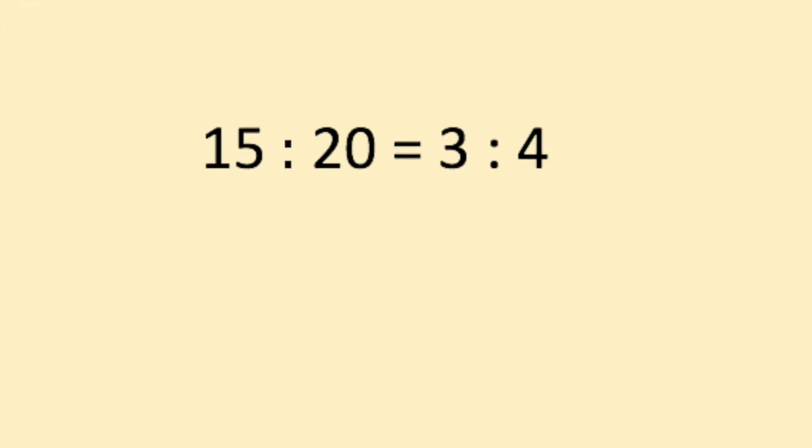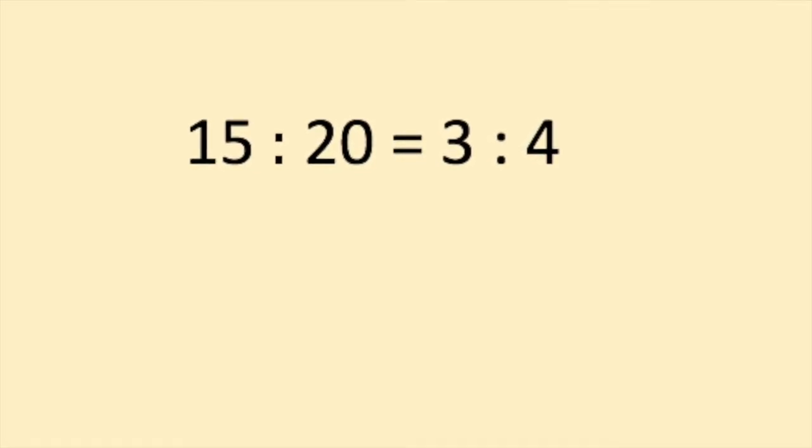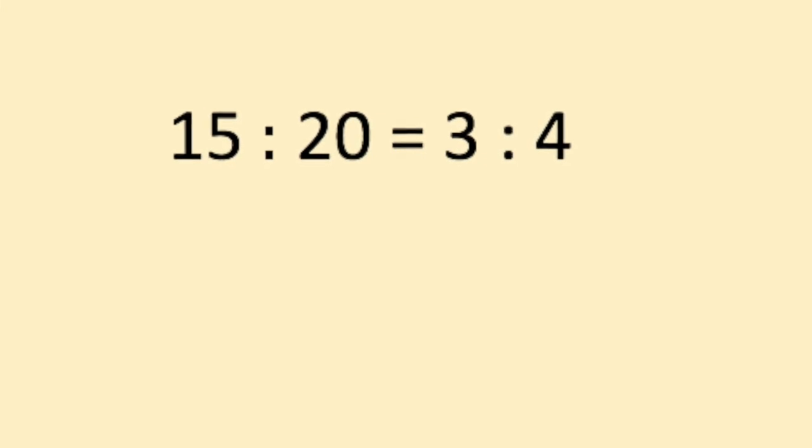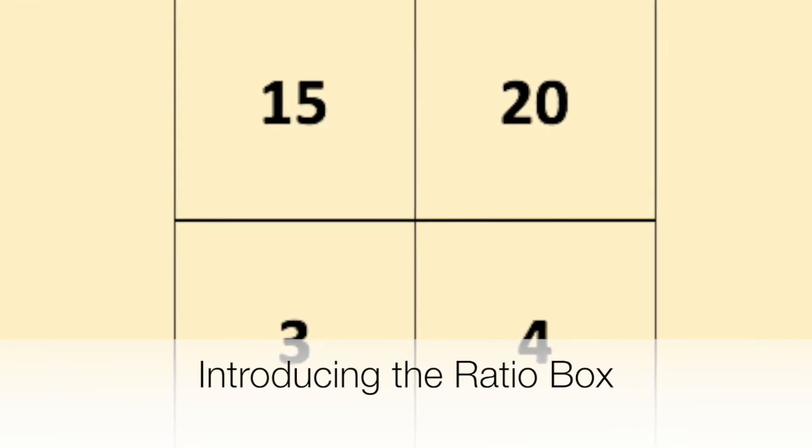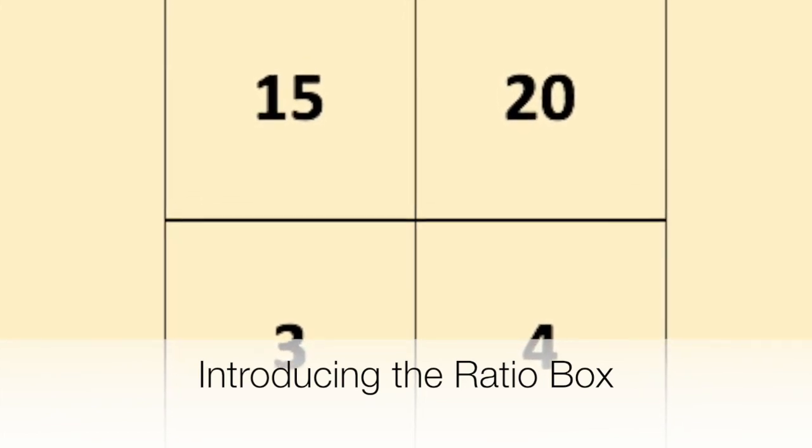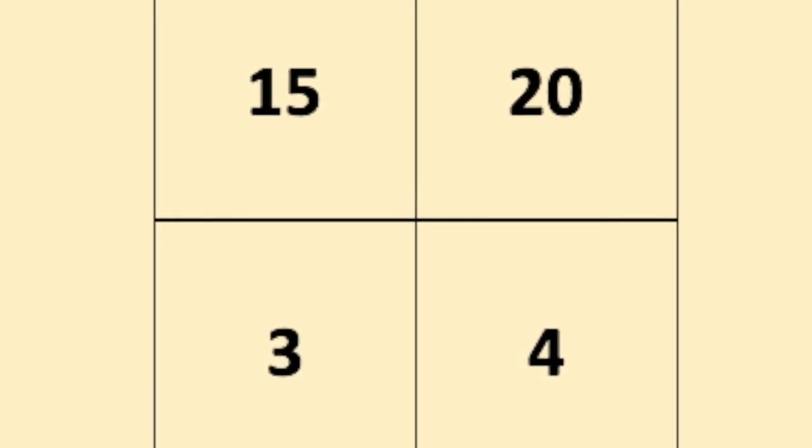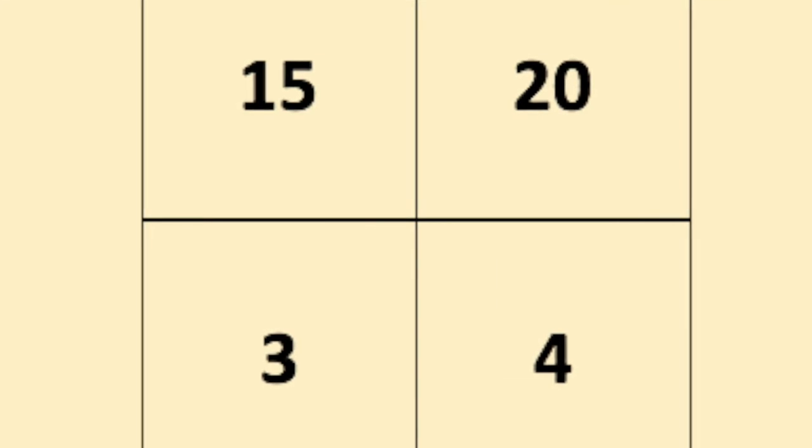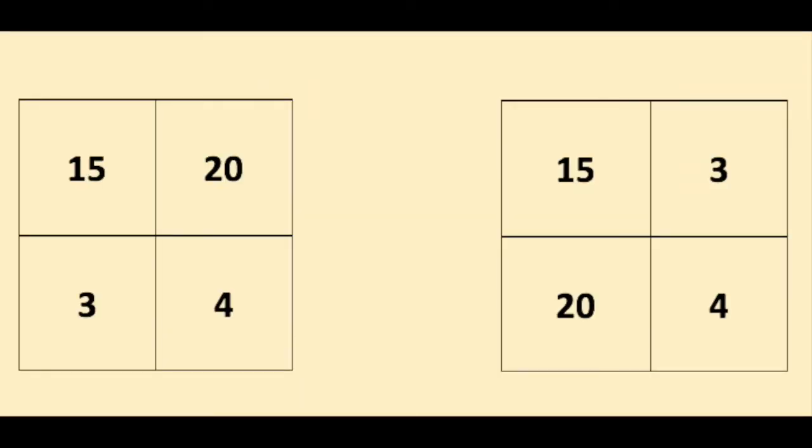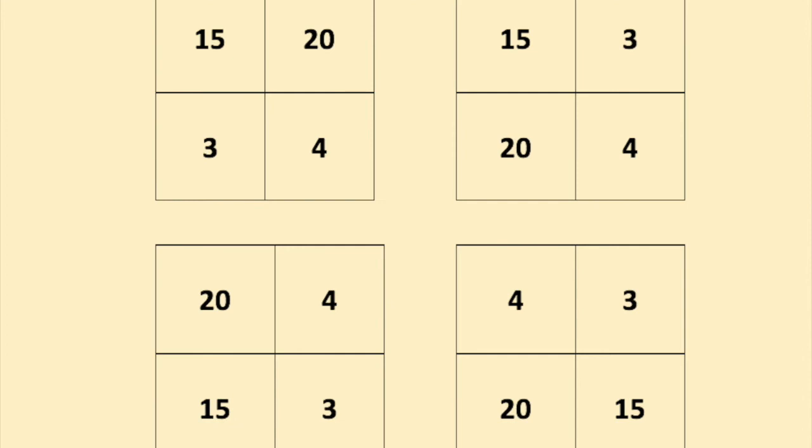The final answer is 3 over 4. 15 over 20 is the same value as 3 over 4. Or, in ratio form, 15 to 20 is the same ratio as 3 to 4. We can also write these ratios under each other or beside each other. For instance, 15 to 20 is the same ratio as 3 to 4. Or, beside each other, 15 to 20 is the same as 3 to 4. Now, in all directions, these are consistent.